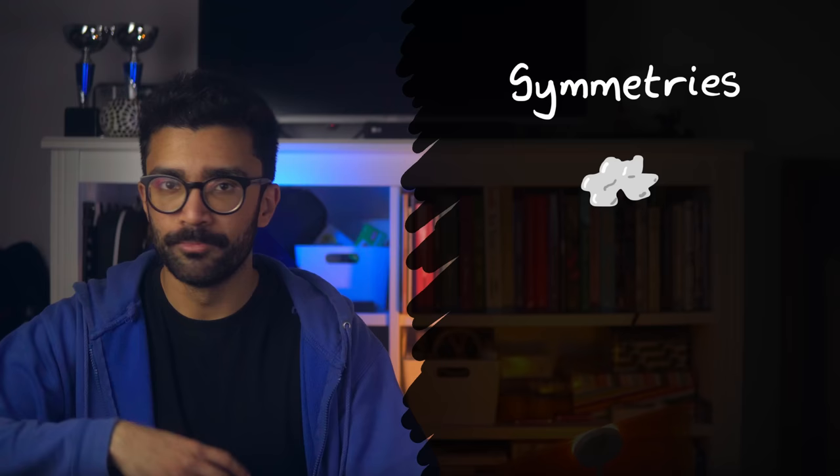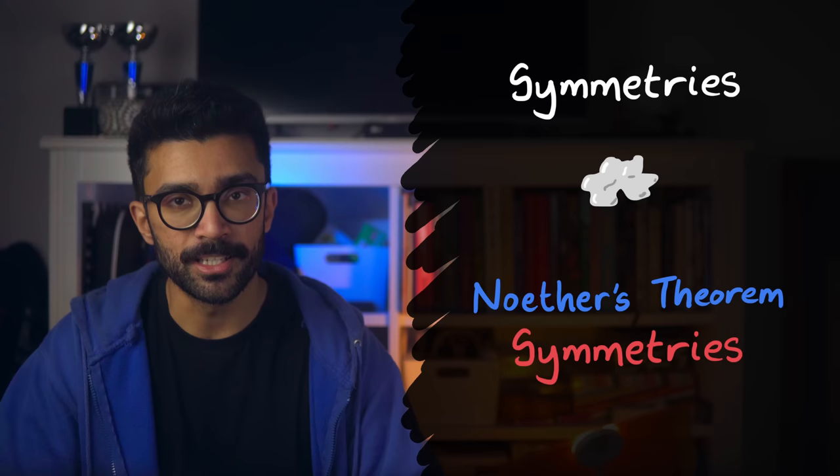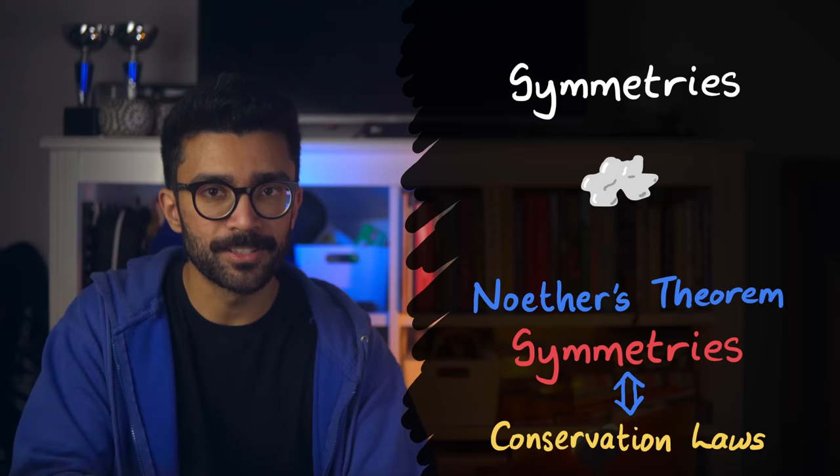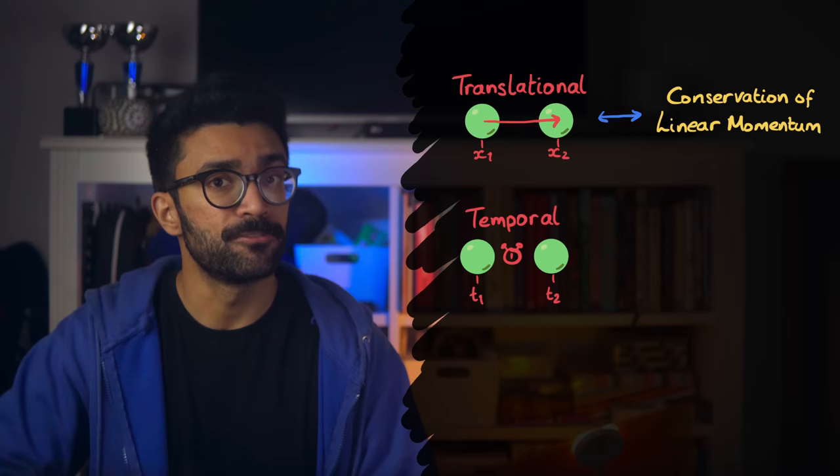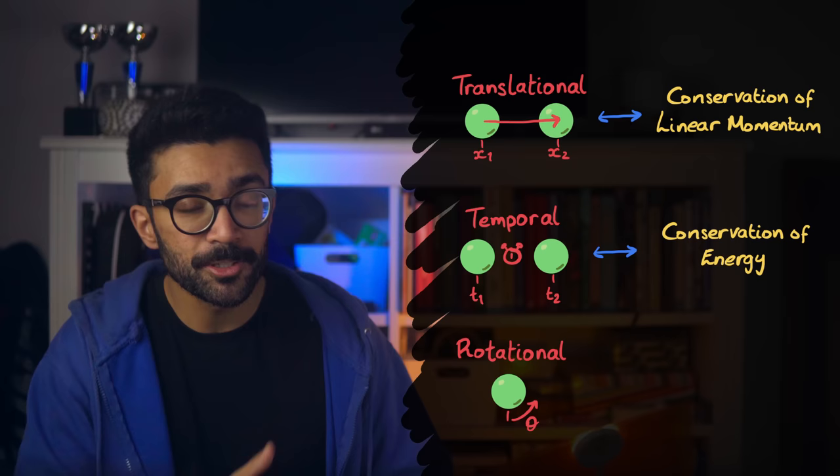Noether's theorem states that these symmetries, these unchanging laws of physics at different positions or times or angles, directly result in conservation laws that we've often been taught at high school physics. Each symmetry has an associated conservation law. The symmetry at different positions is associated with the conservation of linear momentum. The symmetry at different times is associated with the conservation of energy. And the symmetry at different rotation angles is associated with the conservation of angular momentum.